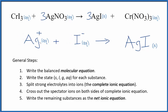Note that charge is conserved — we have a plus and a minus, giving a net charge of zero in the reactants, and this is neutral with a net charge of zero in the products. If you look at the atoms, they're balanced as well. This is Dr. B with the balanced net ionic equation for CrI₃ plus AgNO₃, chromium-3 iodide plus silver nitrate. Thanks for watching.